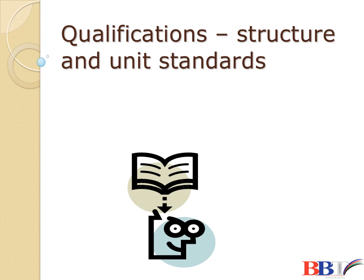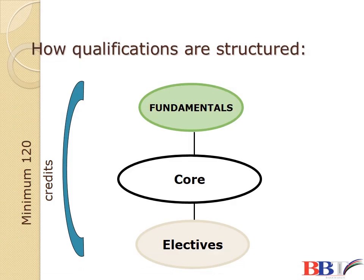Let's jump into the structure of the qualification. For you to be an assessor, you need to know what a qualification is. We're going to look at the components of the qualification and how a qualification is aligned to unit standards, skills programs, or linked to other legacy qualifications. The qualification has three basic components: the fundamental unit standards, core unit standards, and elective unit standards. The minimum credits for a qualification must be at least 120 to qualify for a qualification or certificate.